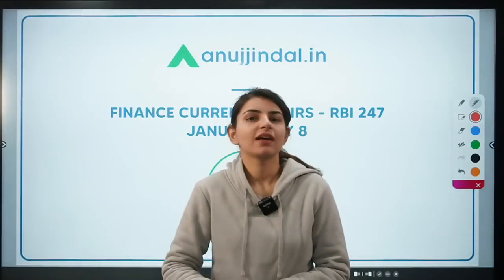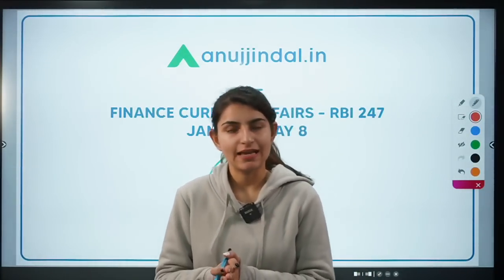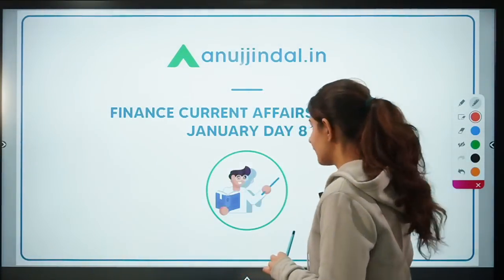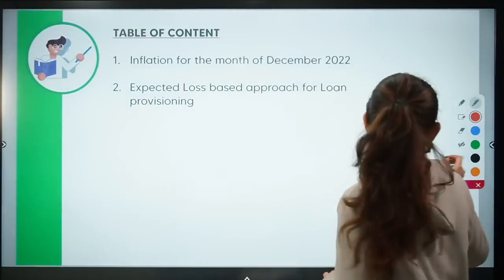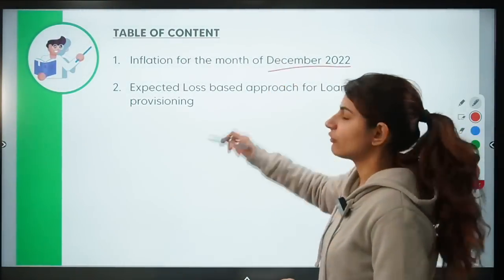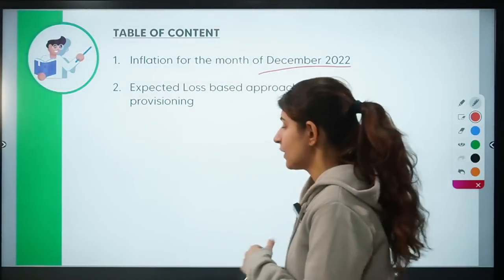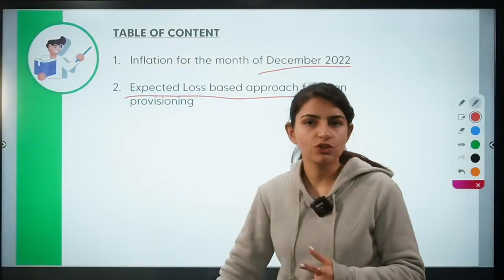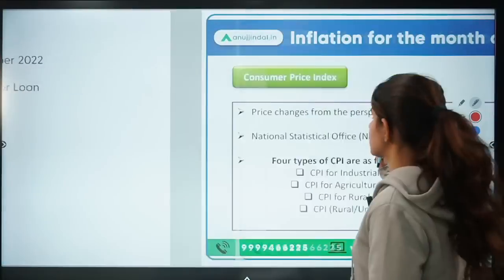Hi everyone, welcome back to another session of RBI 247, wherein we cover finance current affairs which are relevant for RBI and SEBI exams. Today we're going to talk about two very important news items. First one is inflation, especially for the month of December, where we'll also discuss what is CPI and WPI. The second news is about the Expected Credit Loss approach brought out by RBI for provisioning in banks.